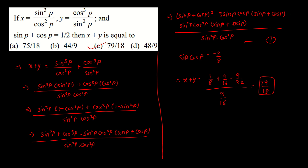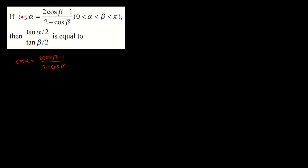The final answer for question 2 is 79/18, which is option C. The next question involves finding a value related to cosα, where cosα is given in a specific form. We use the half-angle identity: cosα = (1 − tan²(α/2)) / (1 + tan²(α/2)).